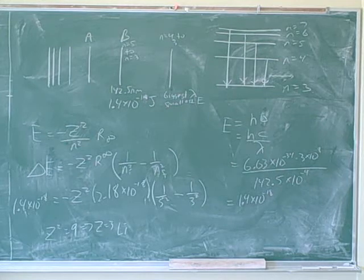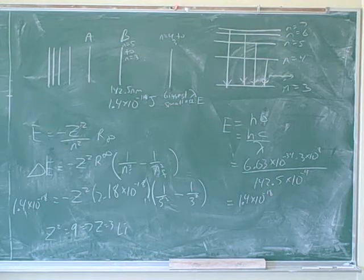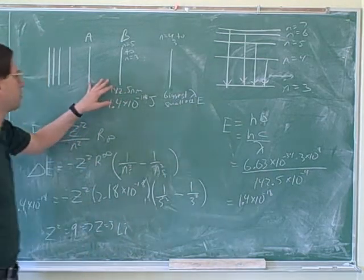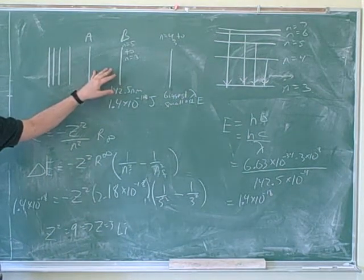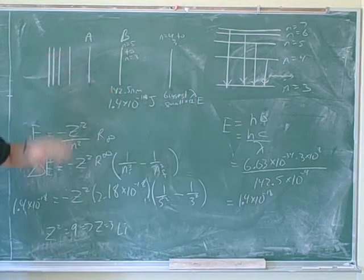And also we had to fixate on that word emission, so that we knew we were moving down and not up. You can't figure out whether these are photons that are being emitted or absorbed just by looking at this picture. These could either be photons that are emitted or absorbed. It's only because they said they were emitted that we know that we're moving down.